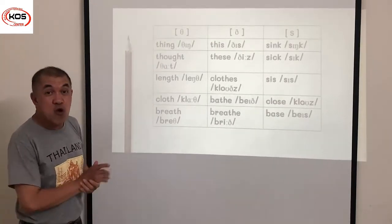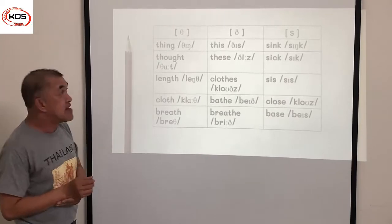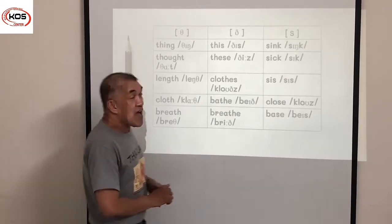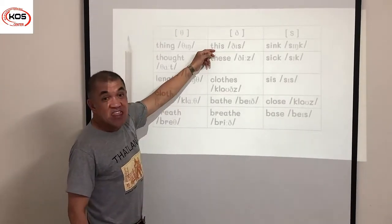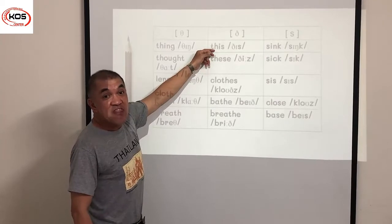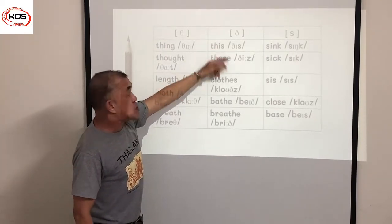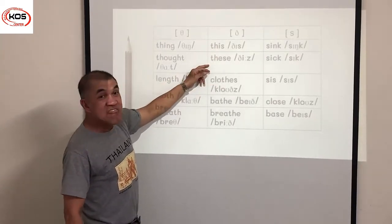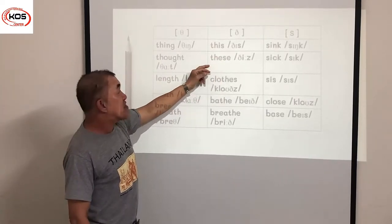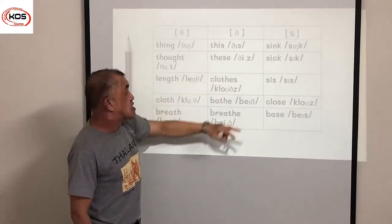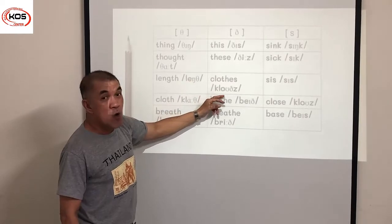These are words with the unvoiced TH sound. Next, we have the voiced TH sound. This word: this, this. These, these, these. Clothes, clothes, clothes.